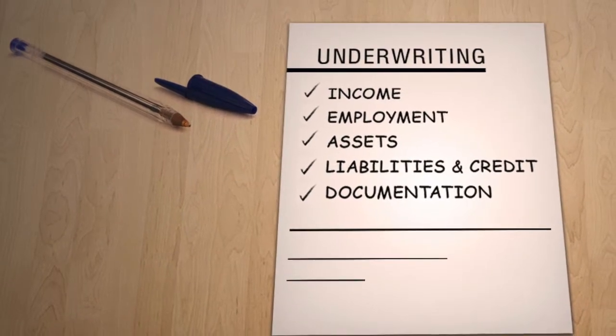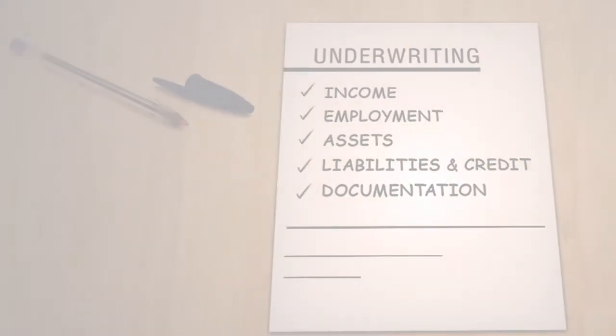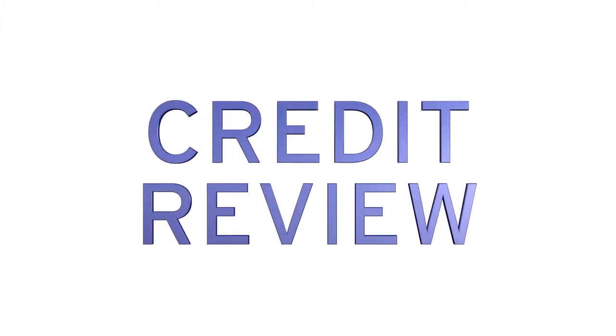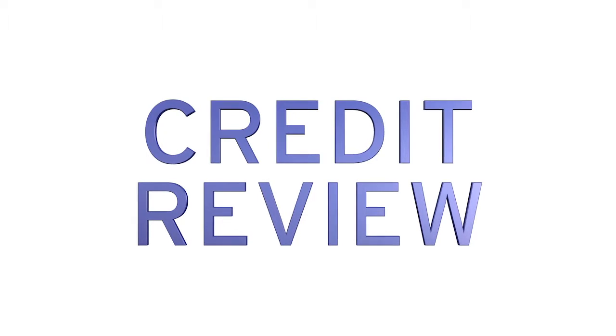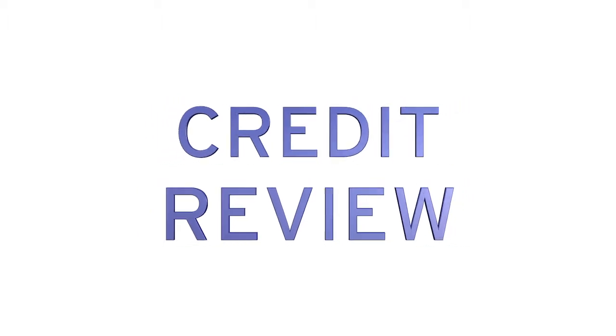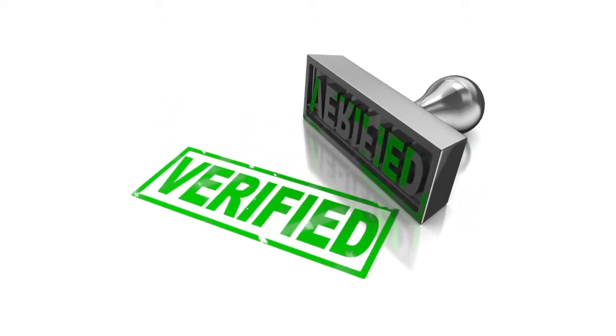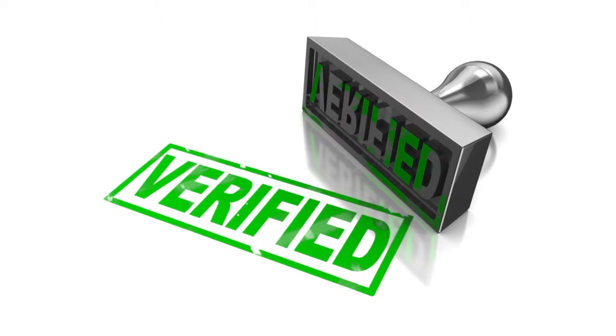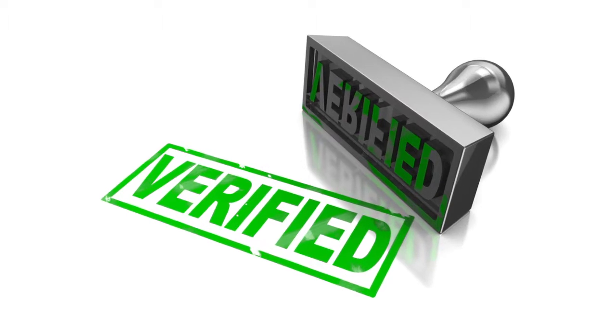Bank statements, W-2s, and other items. Along with the initial credit review, there are verification procedures that must take place. Verification of your income and employment are just an example of how this helps to document your file.